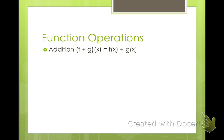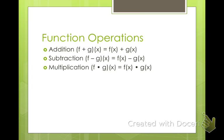So if we have f plus g of x, what we're going to do is add f of x plus g of x — addition just means add the two together. Subtraction, f minus g of x, just means f of x minus g of x. Multiplication means we multiply them together. Division means we divide them, and g of x, whatever is in the denominator, cannot be zero — because you can't divide by zero; it's undefined.